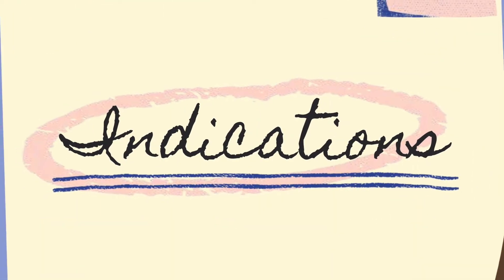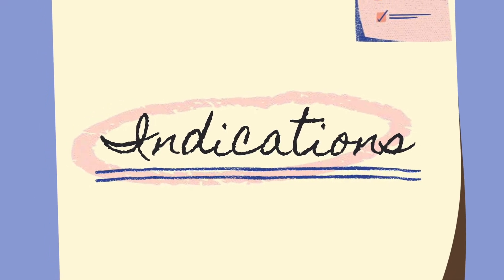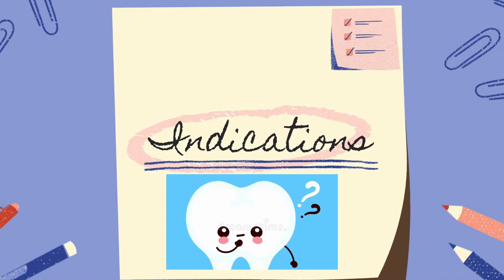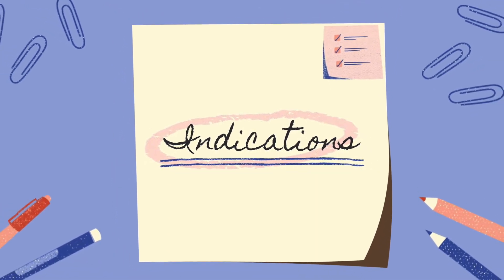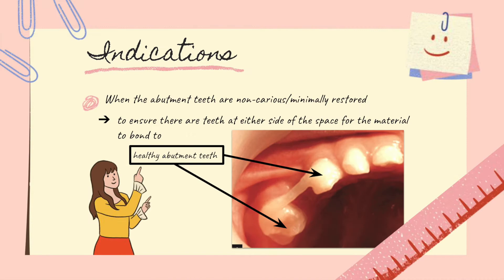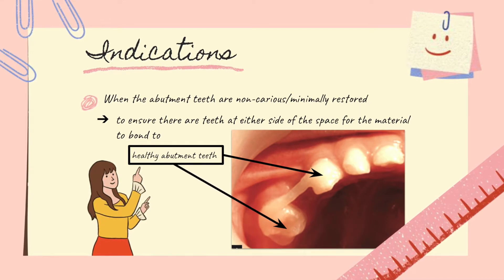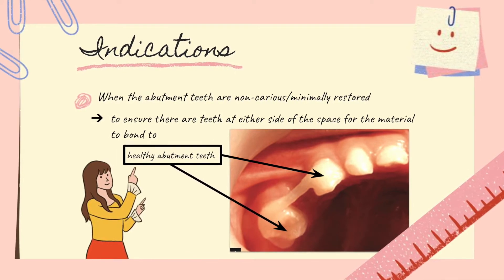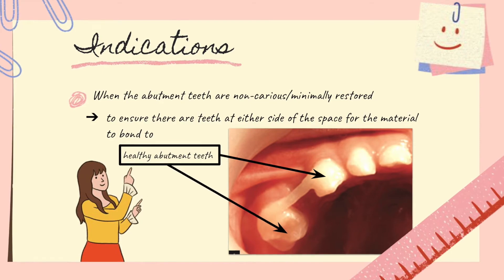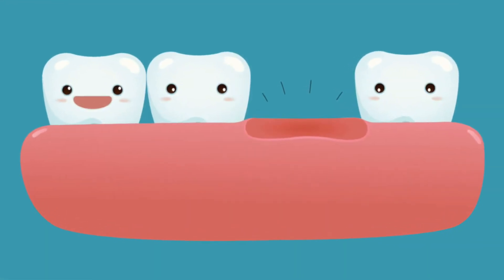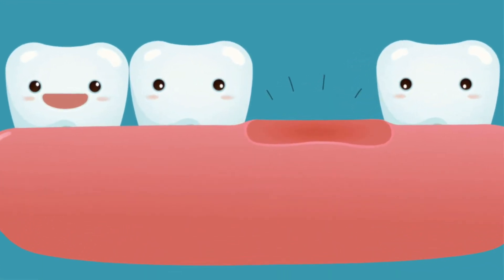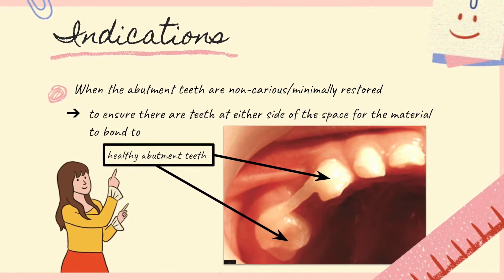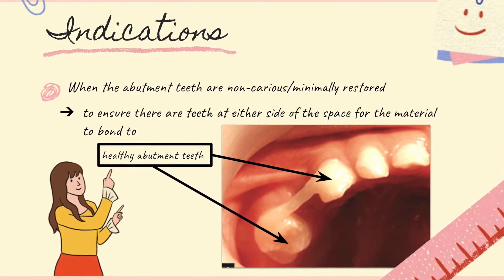We're going to discuss the indications for using glass fiber reinforced composite resin, also known as GFRCR, as a space maintainer. For the first indication, the abutment teeth must be in a non-carious or minimally restored condition — simply put, healthy teeth. This is because we need the tooth structure to be healthy so that the GFRCR can bond to the tooth surface properly and create high bond strength.